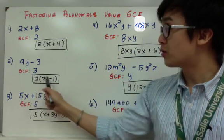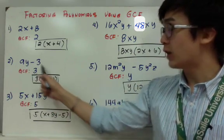So my factor is 3 times 3y minus 1. And if I distribute 3 to 3y, it's 9y. 3 times negative 1 is negative 3.